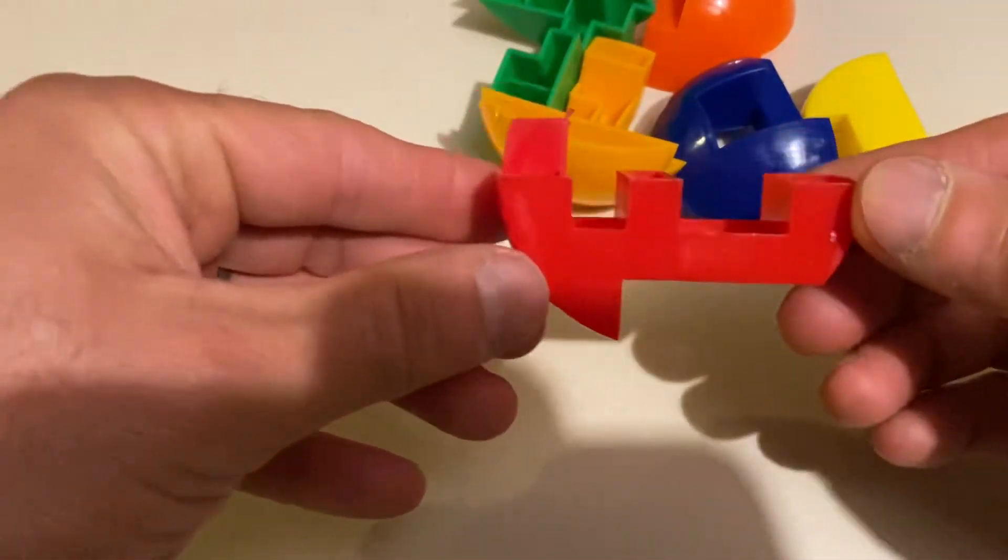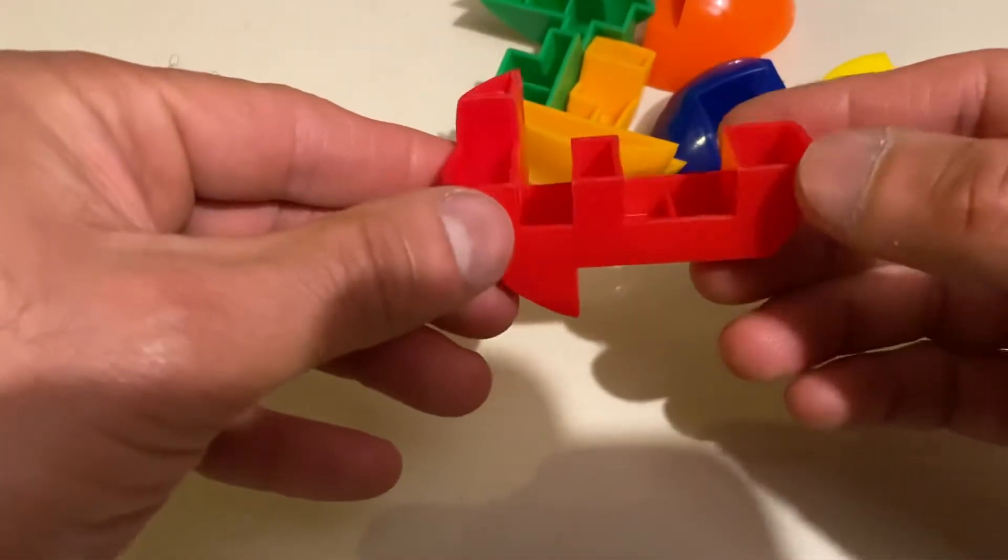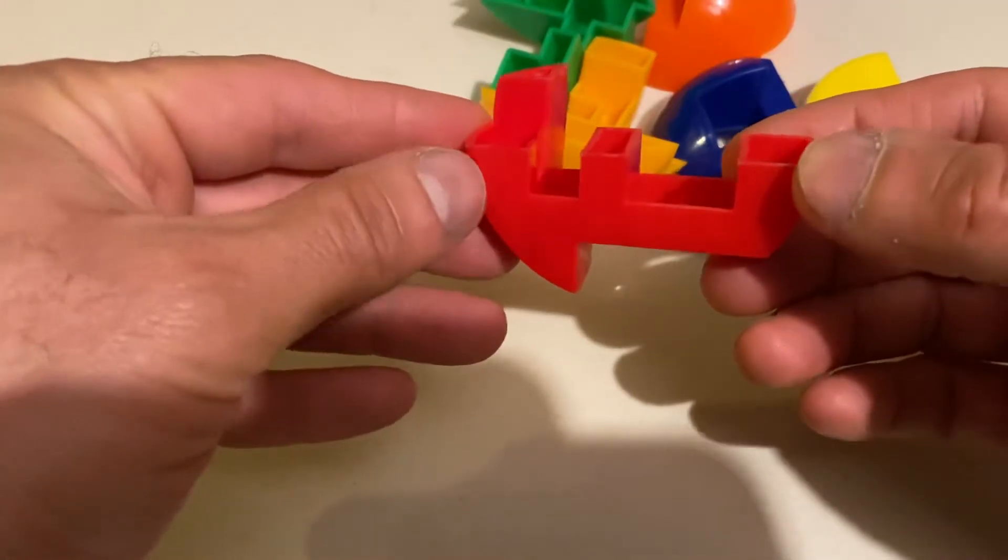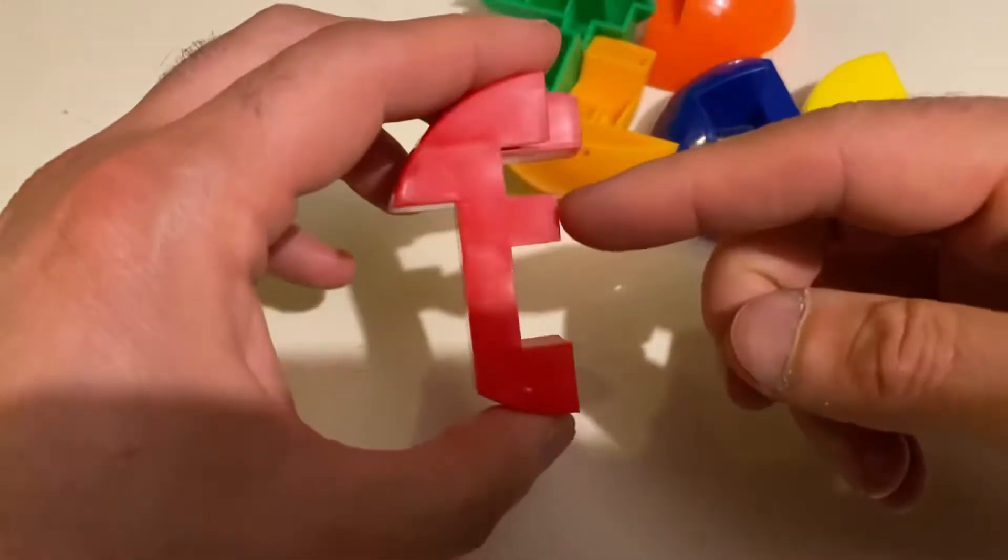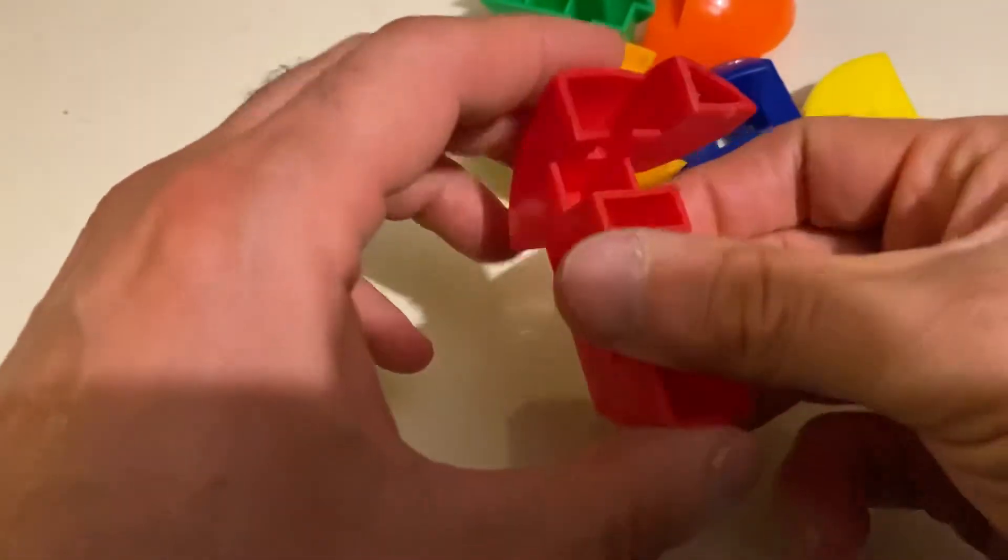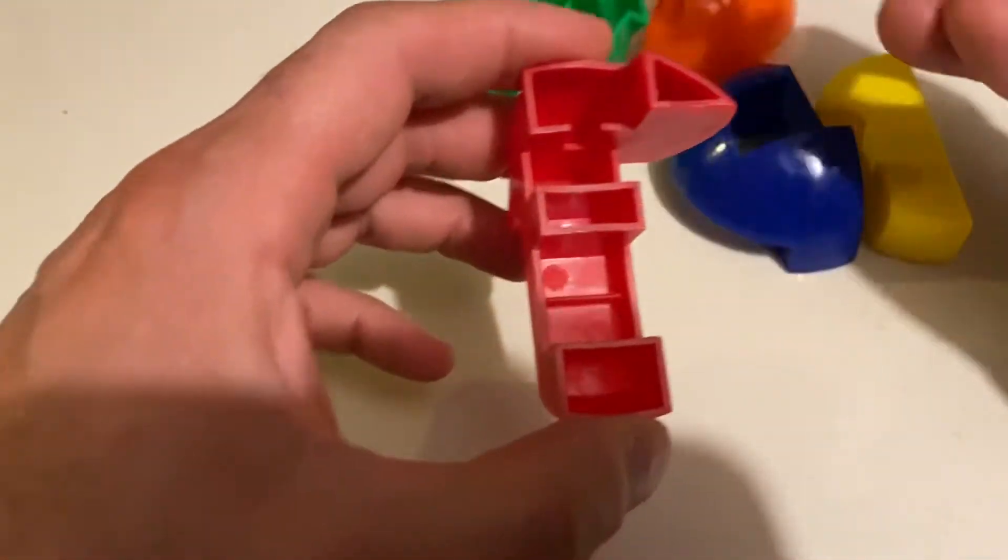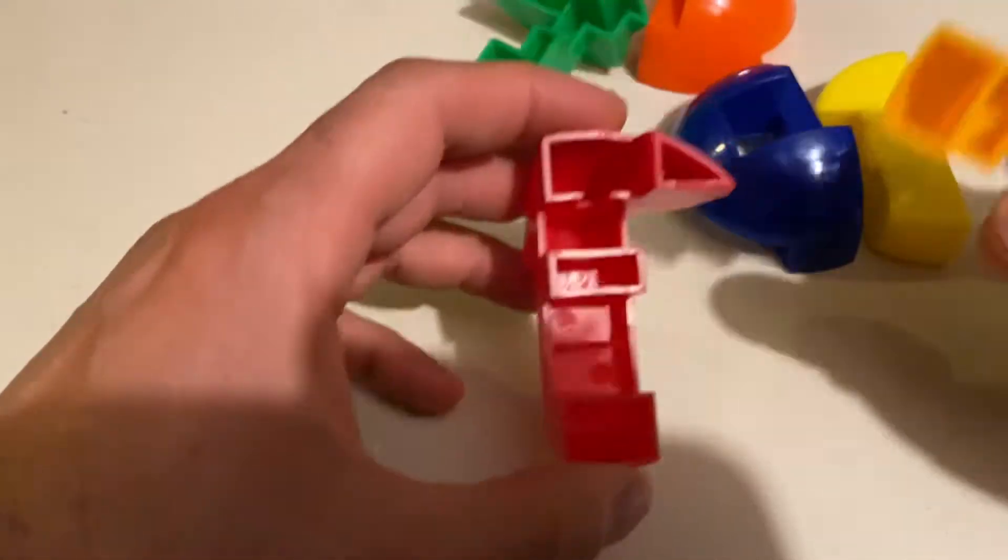This is the first piece that we start with. It comes in different colors - this happens to be red. There's a small groove and a large groove. We take the small groove and the small groove goes in it.